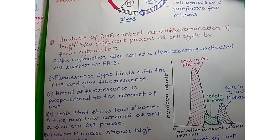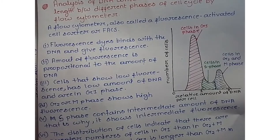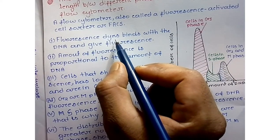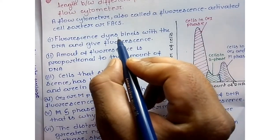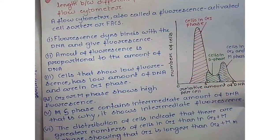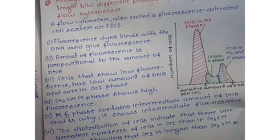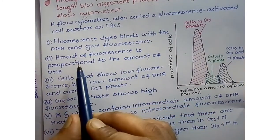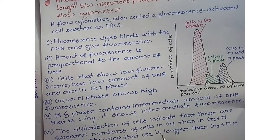The concept is straightforward: fluorescence dyes bind with the DNA and give off fluorescence. By analyzing the level of fluorescence, we can determine whether a cell is present in G1, S, G2, or M phase. The amount of fluorescence is directly proportional to the amount of DNA in the cell.